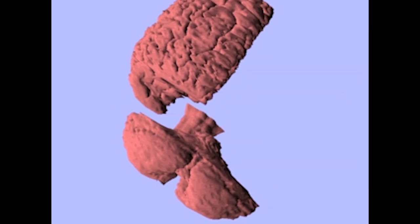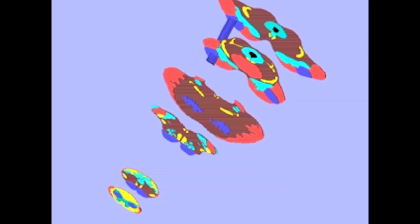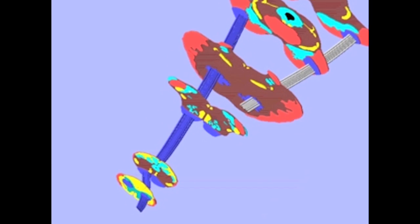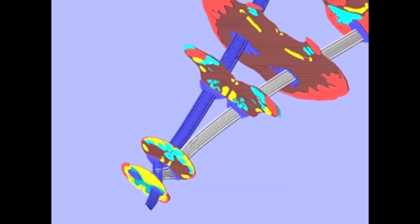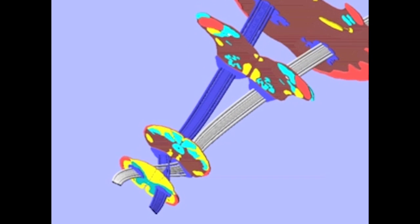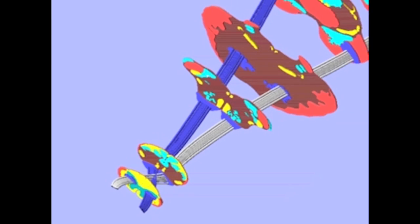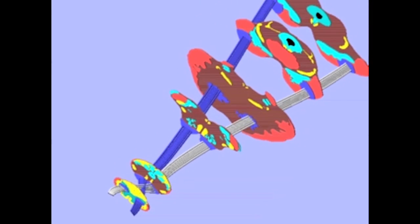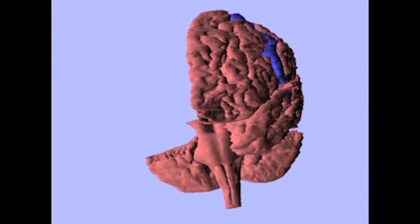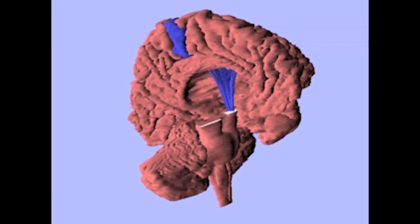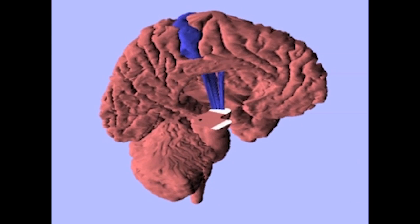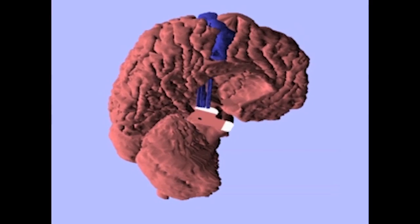The blue fibers descend through the brain stem — midbrain, pons, medulla — and cross at the level of the beginning of the spinal cord to the opposite side. Each hemisphere controls the opposite side of the body. This is important to remember: disease of the corticospinal tract above the cord manifests itself on the opposite side.